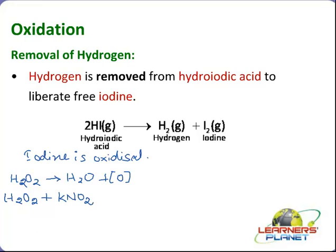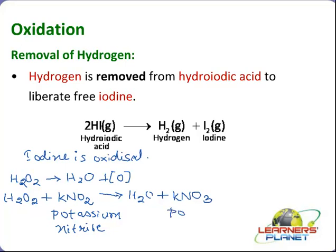For example, H2O2 plus KNO2 — potassium nitrite. H2O2 gives nascent oxygen, and that oxygen adds up to KNO2. The products formed are H2O plus KNO3 (potassium nitrate). So oxygen is added to potassium nitrite, and what is oxidized here is potassium nitrite. This is an example of an oxidation reaction.